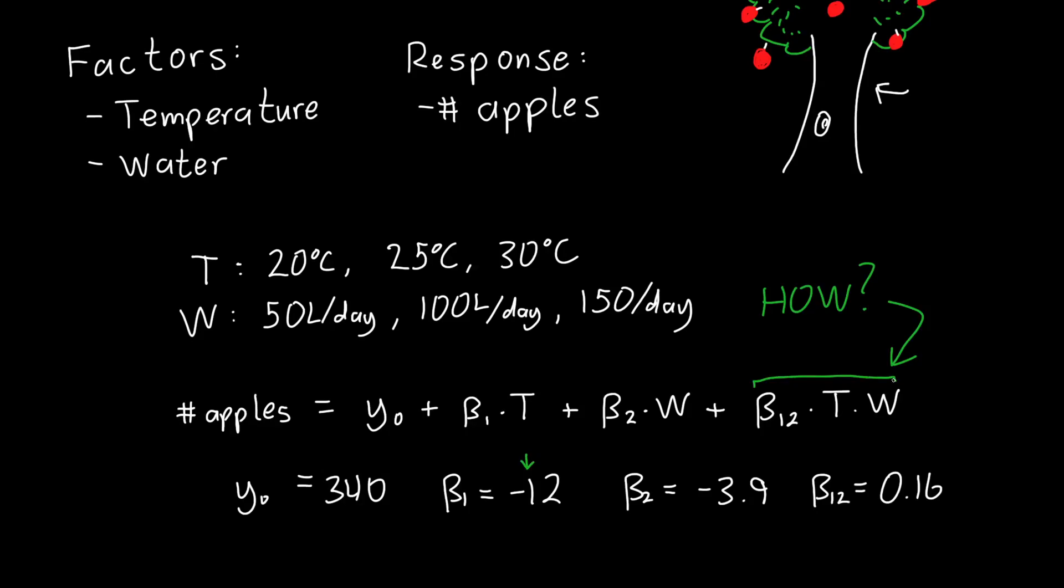I might also ask you, which of these variables has the strongest effect? And you might say, oh, temperature, because my β₁ is the largest. But this is awkward because temperature has units of degrees Celsius. And we're only changing it in increments of 5. Whereas water has units of liters per day. And we're changing that in increments of 50. So it's actually not the case that temperature is the most important effect. It's also not the case that the independent effect of temperature is that it decreases our yield. These are actually both wrong.